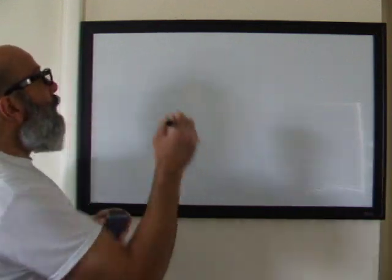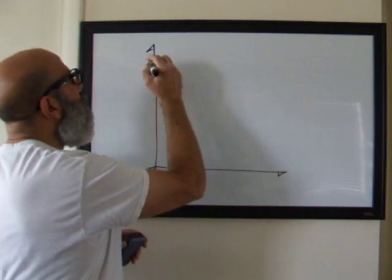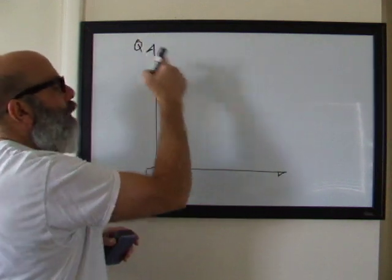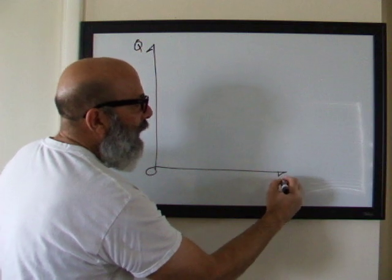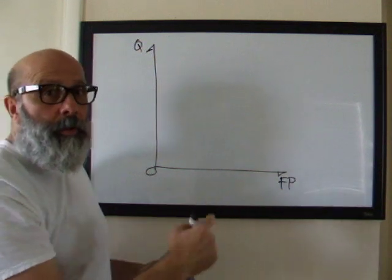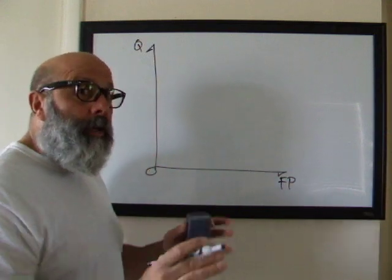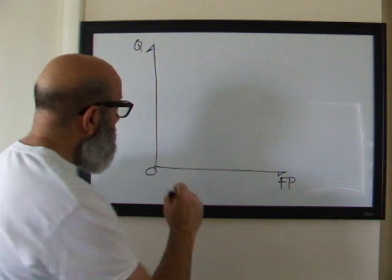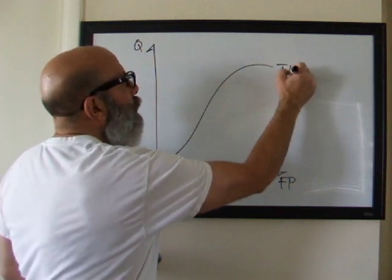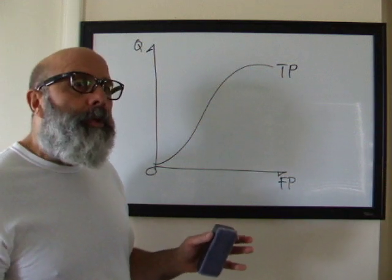So, for total product, we're in our quadrant and we've got quantity on the vertical and we've got factors of production on the horizontal. It could be like a certain number of workers. In the video, it's really produced so I'm just kind of sketching it out. So the other videos are better. So that's kind of what a total product curve looks like. Total product just means all the output that the firm produces.